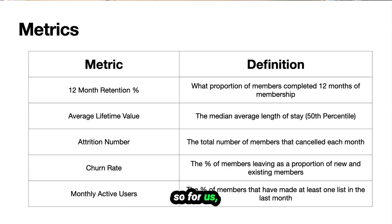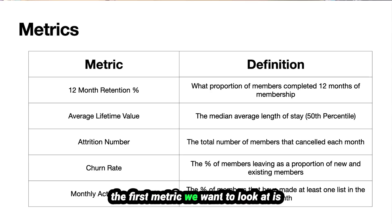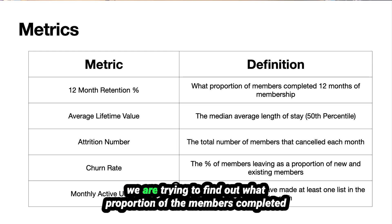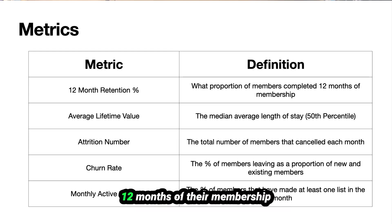The first metric we want to look at is what's called the 12-month retention percentage. We are trying to find out what proportion of the members completed 12 months of their membership.